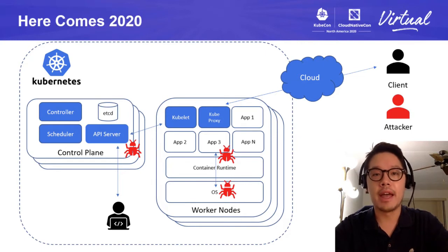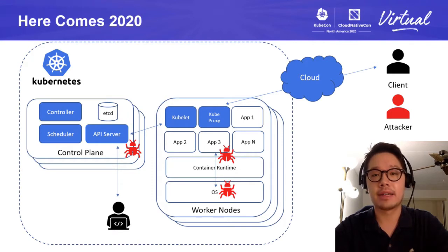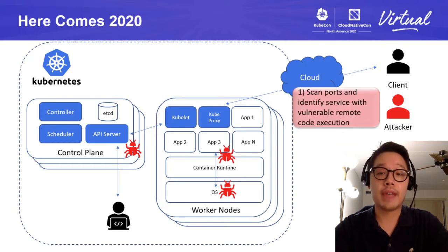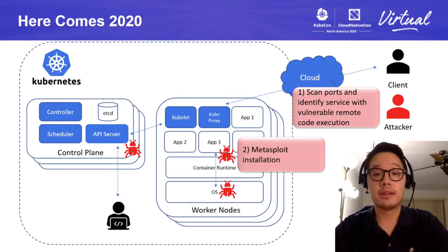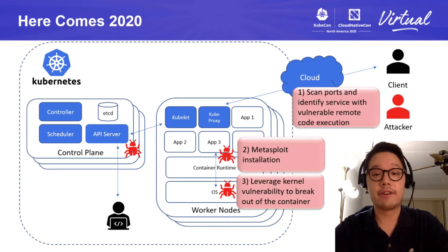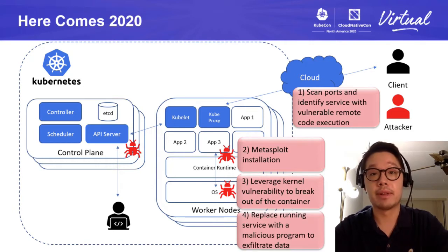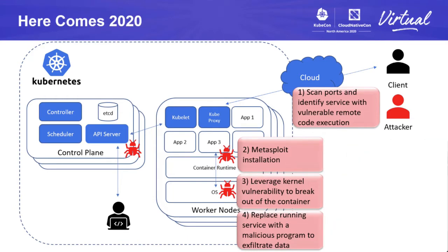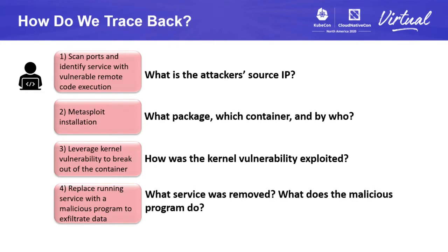Here comes 2020, and not everything goes exactly according to plan. There could be an attacker, and one of the steps they could follow is: first, port scan and identify a service with vulnerable code execution; next, gain access to the system and install packages like Metasploit; then leverage a kernel vulnerability to break out of the container; and lastly, replace a service with a malicious program to steal data. So how do we trace back the attackers, and more importantly, how do we improve our system to identify the attack at the earliest stage?